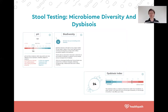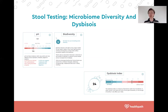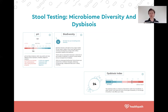Stool or microbiome testing looks at various elements of digestive function: the microbiome ecosystem of bacteria, parasites, and yeasts, as well as functional markers. We can look at microbiome diversity, which is thought to be one of the most important markers of gut health — the more diverse the microbiome, the more resilient it is, and the better it can maintain a healthy state when faced with insults like antibiotics or a poor diet. We can also look at a dysbiosis index, which measures the number of deviations within your stool results compared to normal: higher is worse, lower is better.